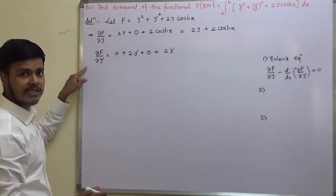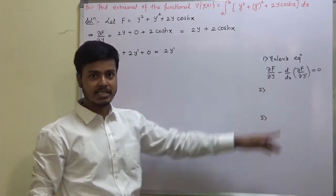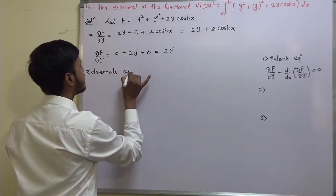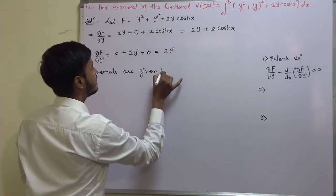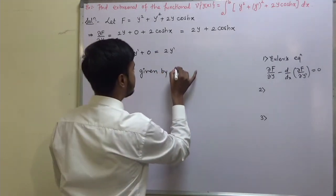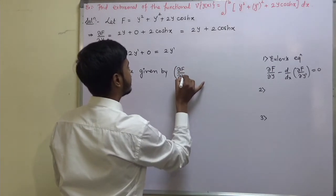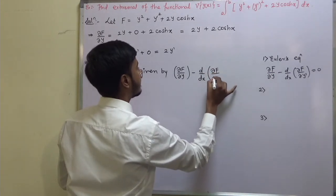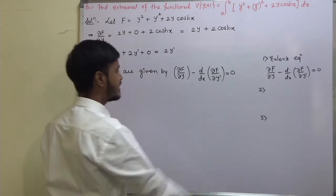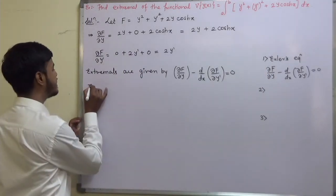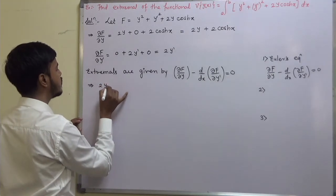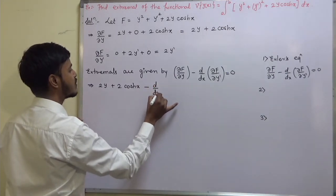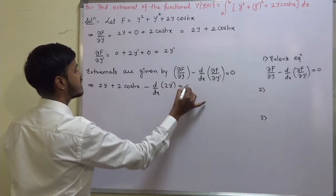After finding these two derivatives, we apply Euler's equation to get the extremal. Substituting: del f by del y minus d/dx of del f by del y-dash equals 0 gives us 2y plus 2 cosh(x) minus d/dx of 2y-dash equals 0.